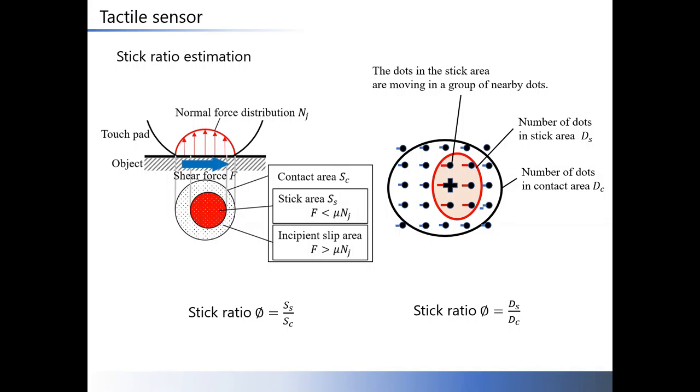The dots in the stick area are moving in a group of nearby dots. Dots outside the stick area do not form a group in a sense of similar displacements. As a result, there is a difference in the displacements between the dots in the stick area and the other dots. Therefore, the two areas can be distinguished by comparing the displacement of dots.